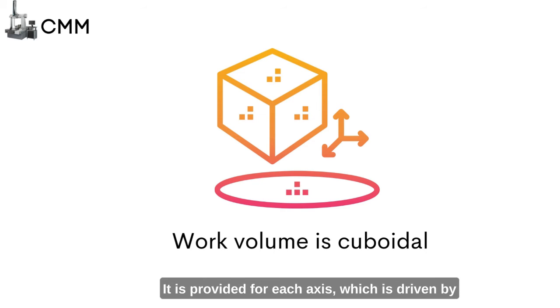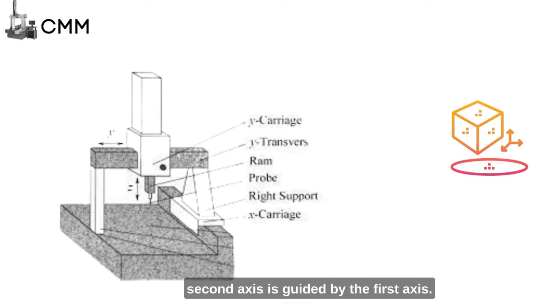The work volume is provided for each axis, which is driven by a separate motor. While the straight-line motion of the second axis is guided by the first axis, the third axis, in turn, is guided by the second axis.